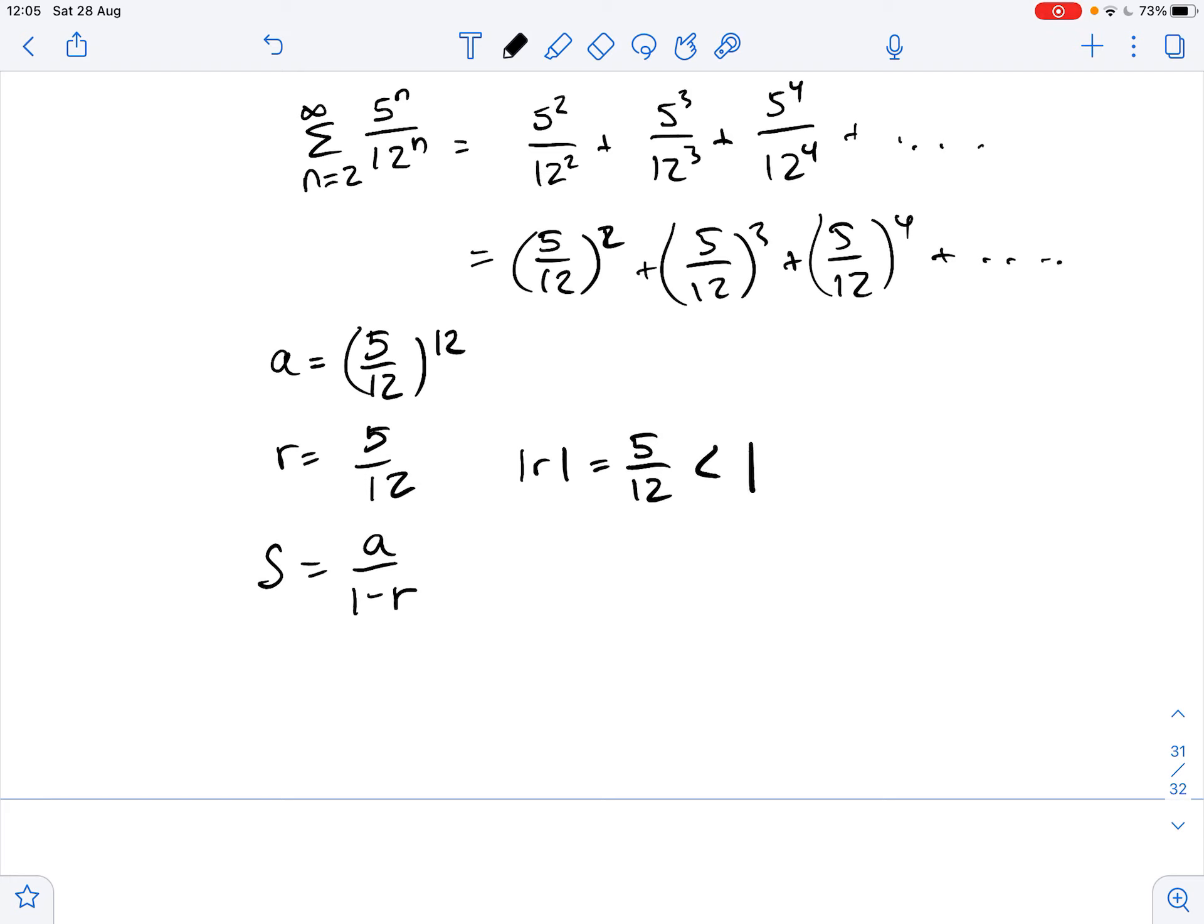In our case, the absolute value of r equals 5 over 12, which is less than 1. So we can use this formula.